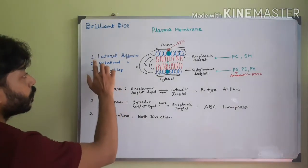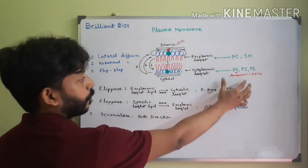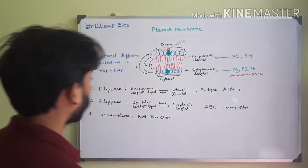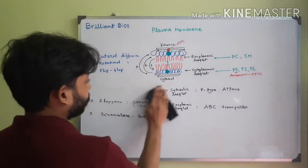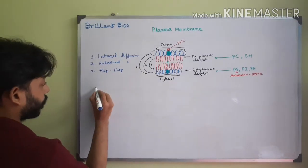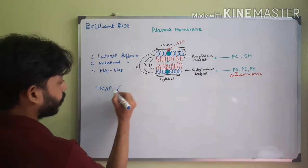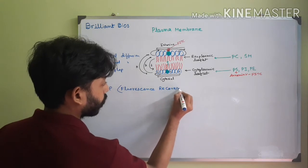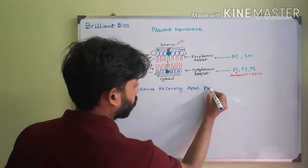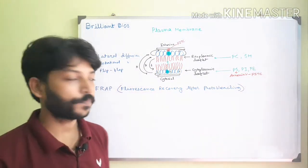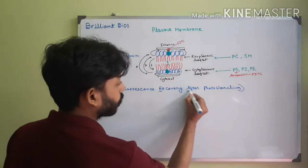We performed the annexin-5 assay to understand apoptosis. Now I will show another experiment by which we can know that lateral diffusion occurs. The method is called FRAP. The full form of FRAP is very interesting — Fluorescence Recovery After Photobleaching. This name actually tells the total story.